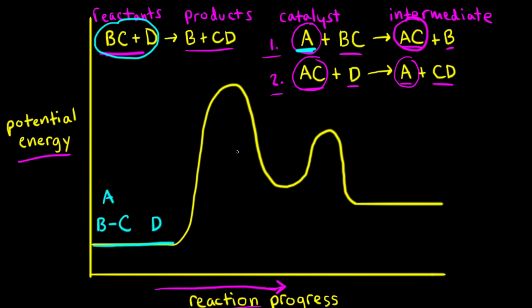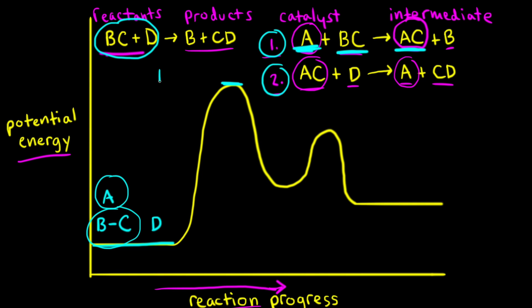We can see in our energy profile that we have two hills. The first hill corresponds to the first step of the mechanism and the second hill corresponds to the second step. The peak of the first hill is the transition state for the first step. In the first step, catalyst A is colliding with BC to form our intermediate AC. At the transition state, the bond between B and C is breaking, and at the same time the bond between A and C is forming. Reactant D is still present at the top of this hill as well.